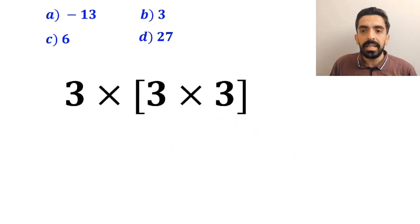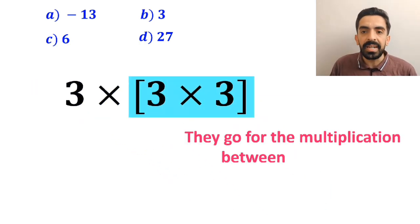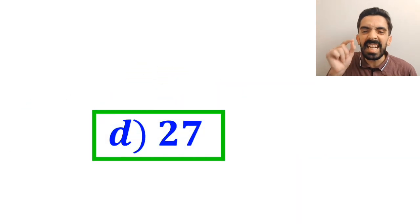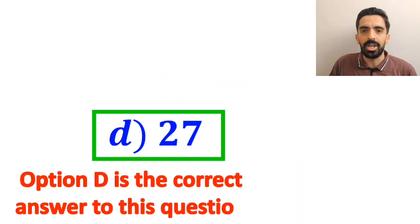In the final step, they go for the multiplication between the 3s and replace this expression with 3 times 9, which eventually gives them the answer 27. And without any hesitation, they quickly say that option D is the correct answer to this question.